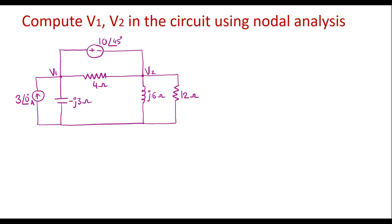This is the given circuit. This is node V1 and this is node V2. Let this be the reference node. We know that the voltage of the reference node is 0 volts.